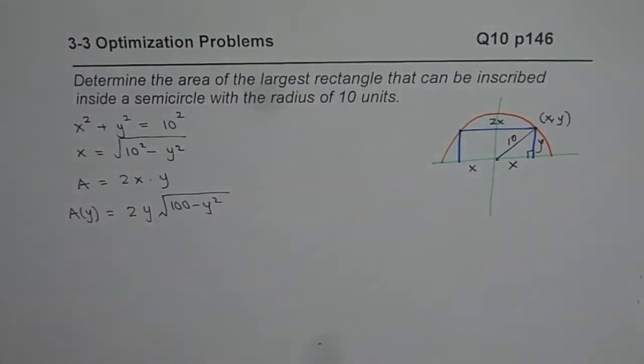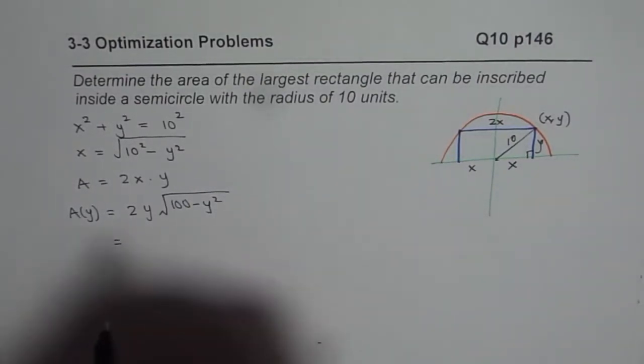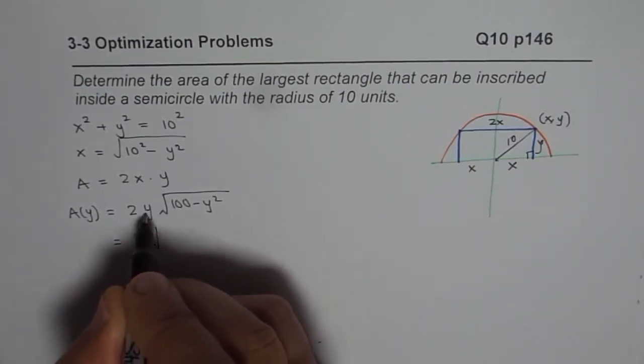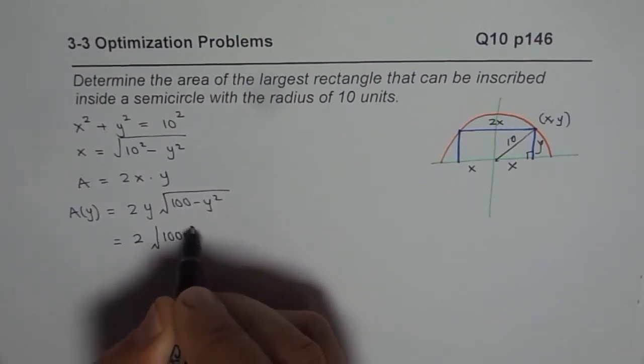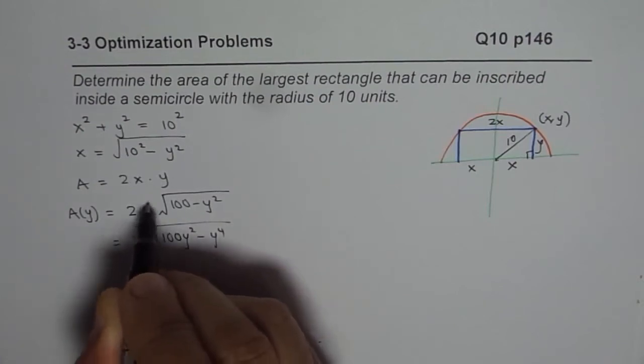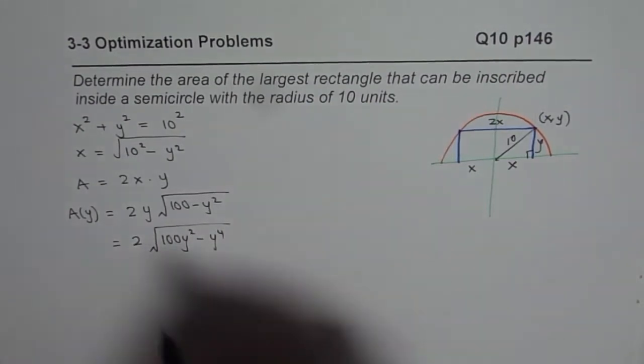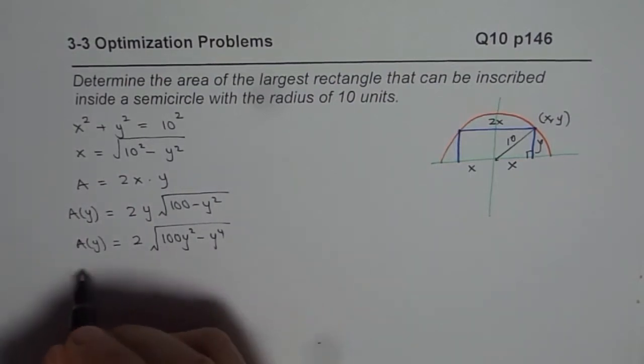Now what I will do here is I am adopting a slightly different approach in this particular case. I will write this function as 2 times, and I will take y inside the square root. That is going to help me to find the derivative. So it becomes y squared when I take it inside. So I get 100y squared minus y to the power of 4. So we took this y inside the square root giving us this particular thing.